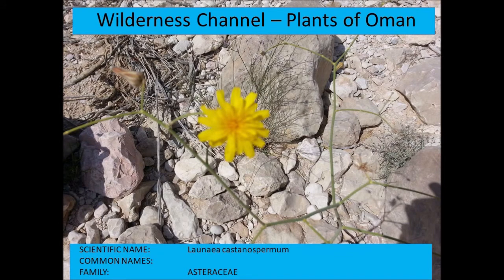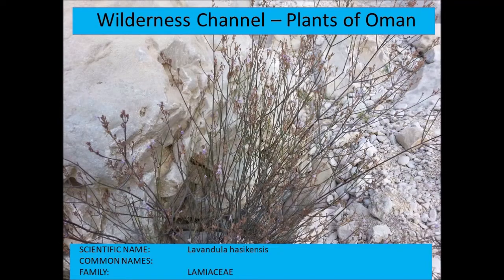This is Launaea castanospermum — one of several Launaea species of the Asteraceae that occur in Oman.